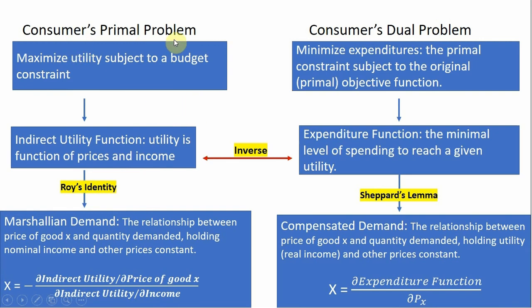The consumer's primal problem is maximizing utility — maybe a Cobb-Douglas utility function — subject to a budget constraint. From this, we can get the indirect utility function: utility as a function of just prices and income. Using Roy's identity, we can recover the Marshallian or ordinary demand functions from the indirect utility function. We'll go through Roy's identity and recovering these Marshallian demands in this video.